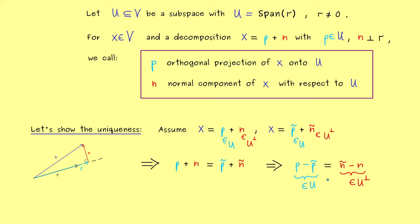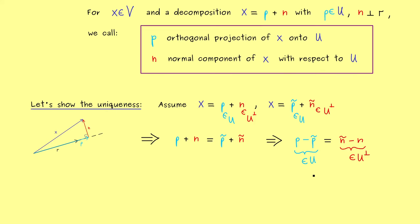Hence our result here is that the new vector we form here lies in the intersection of u with the u orthogonal complement. And indeed this intersection only contains the zero vector.